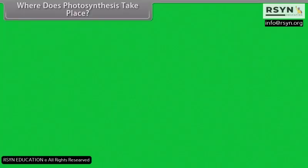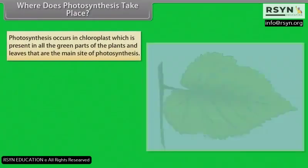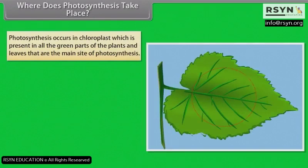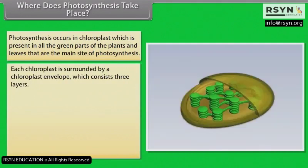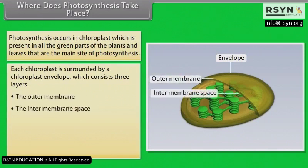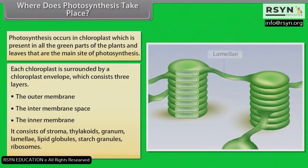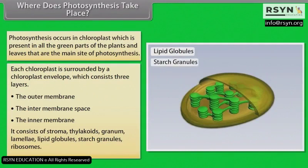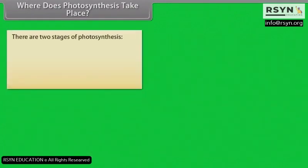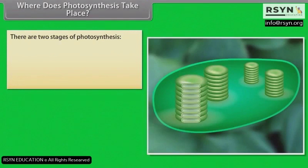Photosynthesis occurs in the chloroplast, which is present in all the green parts of plants, with leaves being the main site. Each chloroplast is surrounded by a chloroplast envelope consisting of three layers: the outer membrane, the inter-membrane space, and the inner membrane. It contains stroma, thylakoids, granum, lamellae, lipid globules, starch granules, and ribosomes.